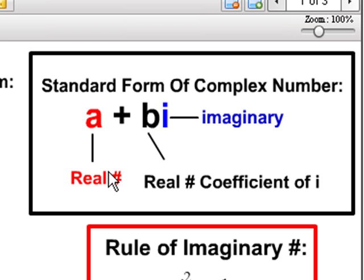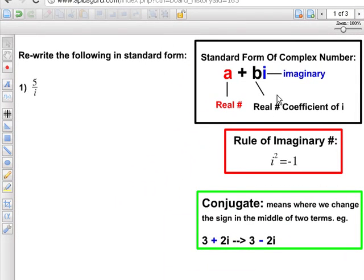such as 1, 25, 37, plus bi, where b is basically the coefficient of i and is also a real number, and i is the imaginary number.